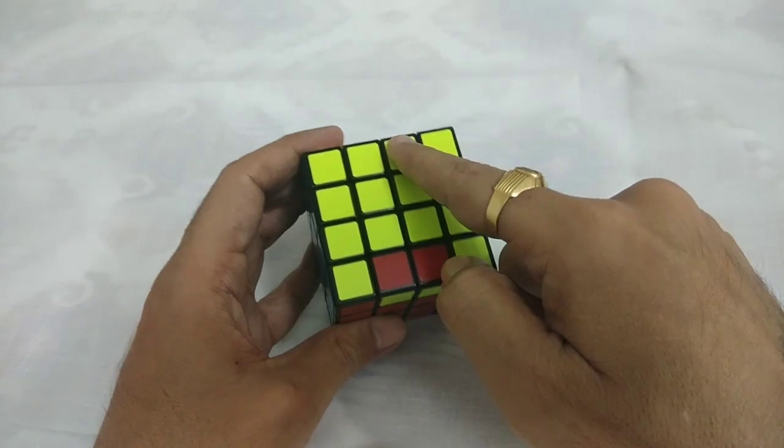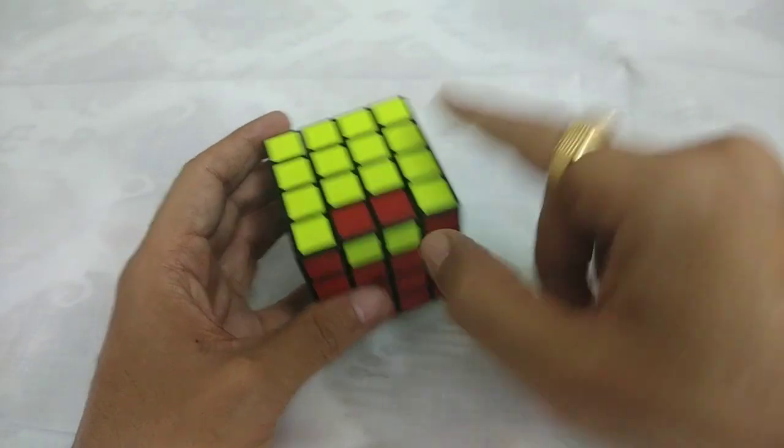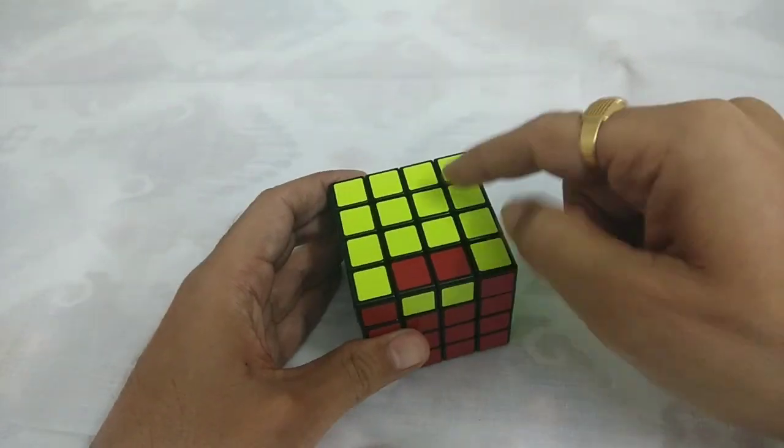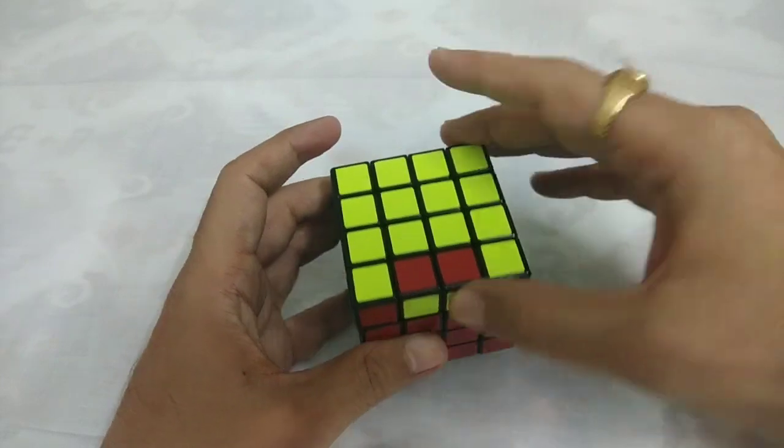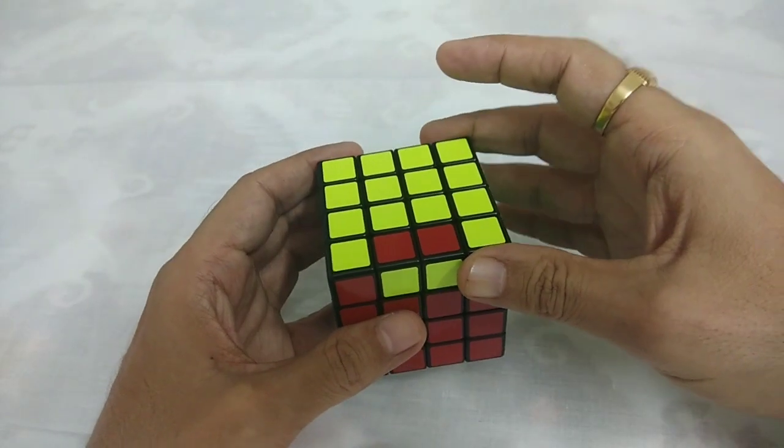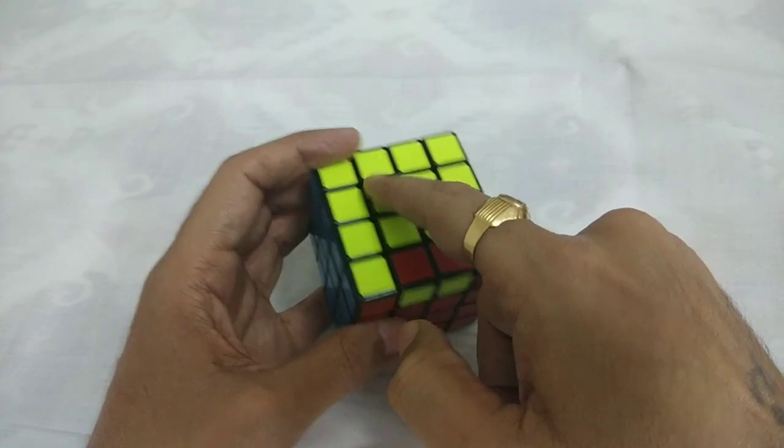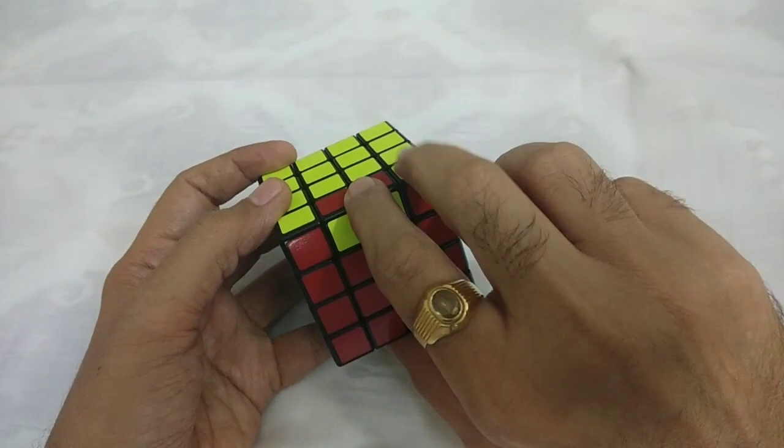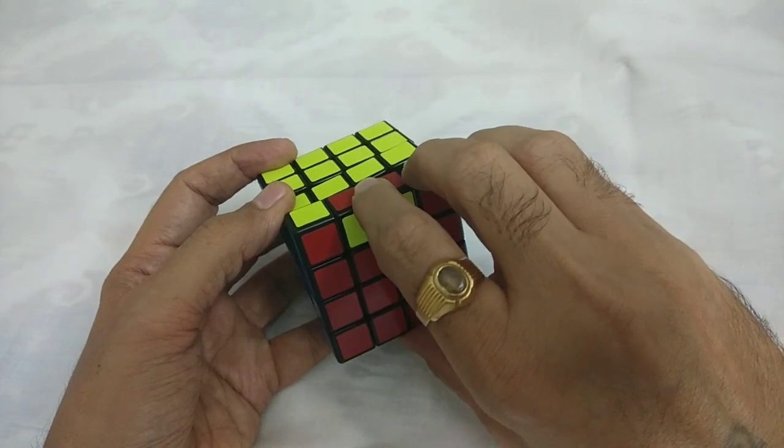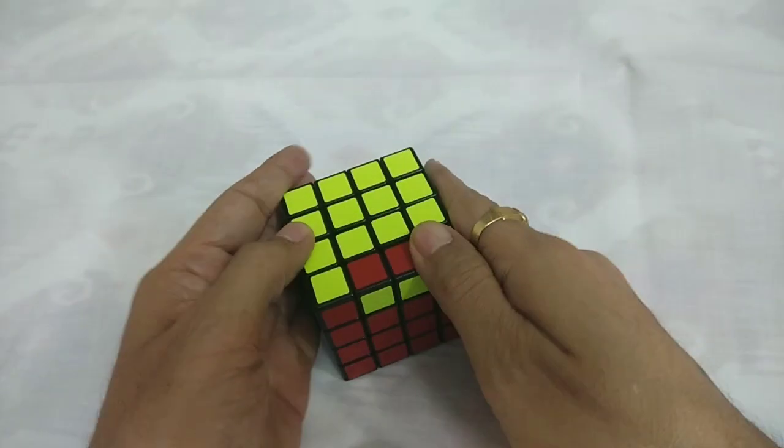We will first move this layer and rotate this. So whenever we move middle layer of right, we will move this top layer two times. And whenever we move this left layer, middle layer, we will move this front two times. Right. So I will just show you.